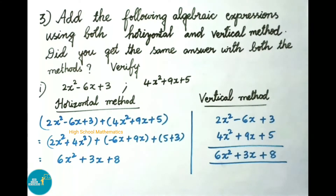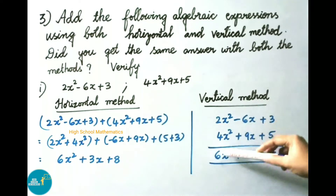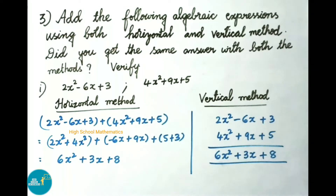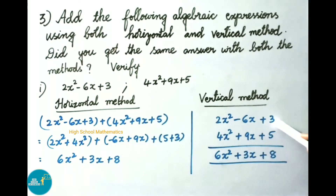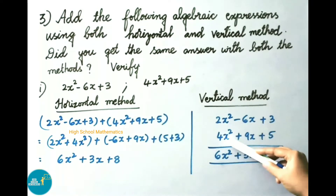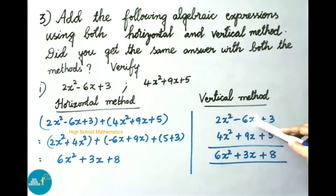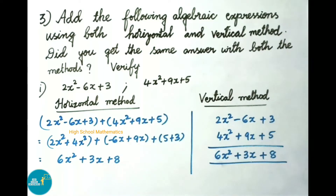Now let us solve the sum using the vertical method. In vertical method we first write the given expressions in standard form with like terms in the same column, then do addition. Writing 2x square minus 6x plus 3 and 4x square plus 9x plus 5: 2x square plus 4x square is 6x square; 9x minus 6x is plus 3x; 3 plus 5 is 8. So the answer is 6x square plus 3x plus 8. In both methods we got the same answer.